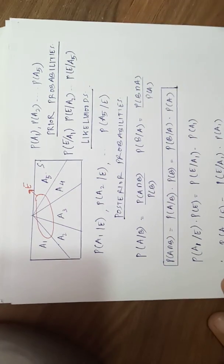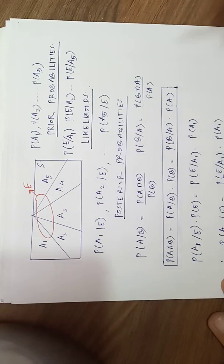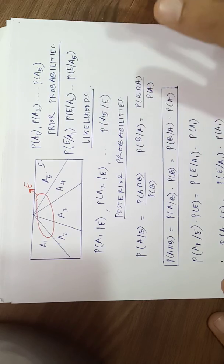So this is the last concept of chapter probability, that is Bayesian theorem.